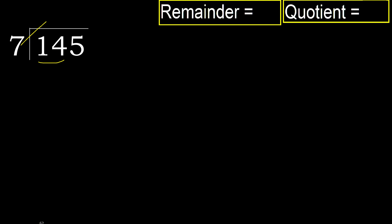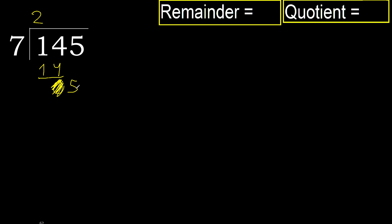21 is greater. 7 multiplied by 2 is 14, which is not greater. 14 minus 14 equals 0. Next, bring down — eliminate 0 on this side: 5.